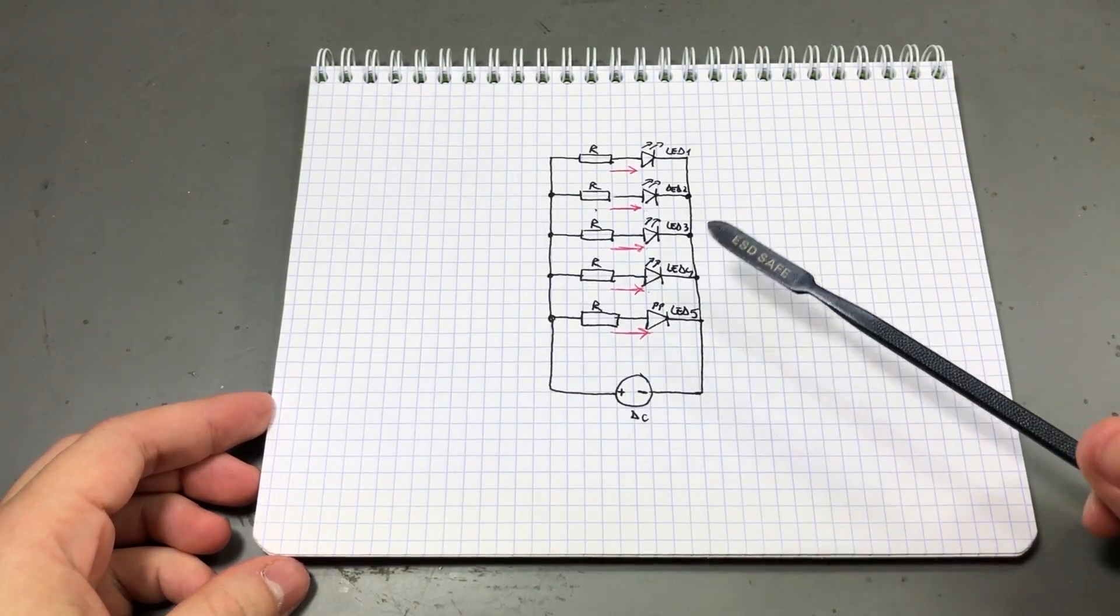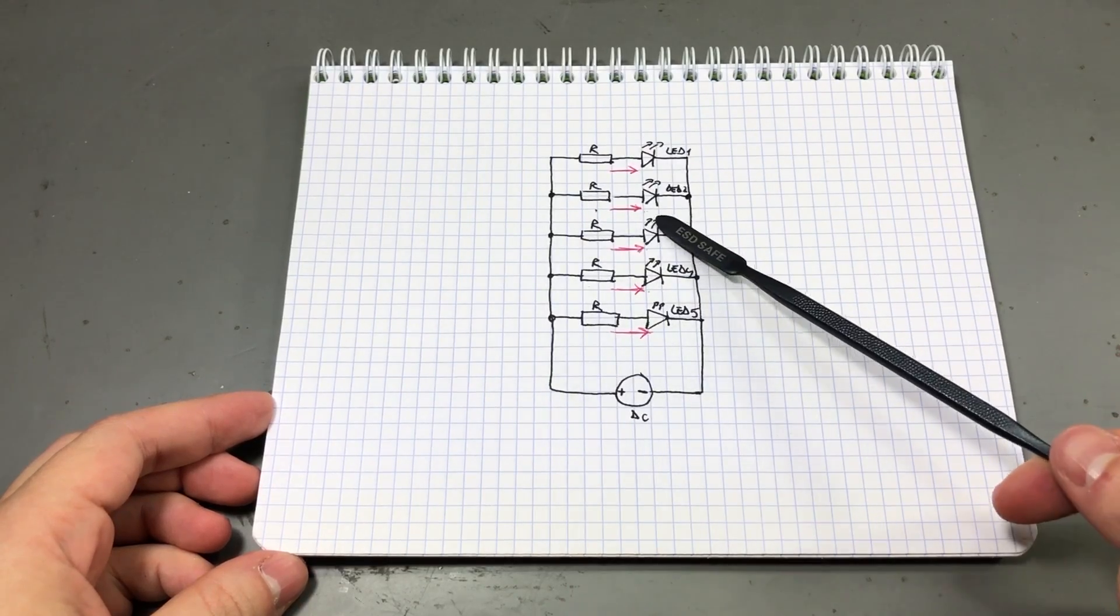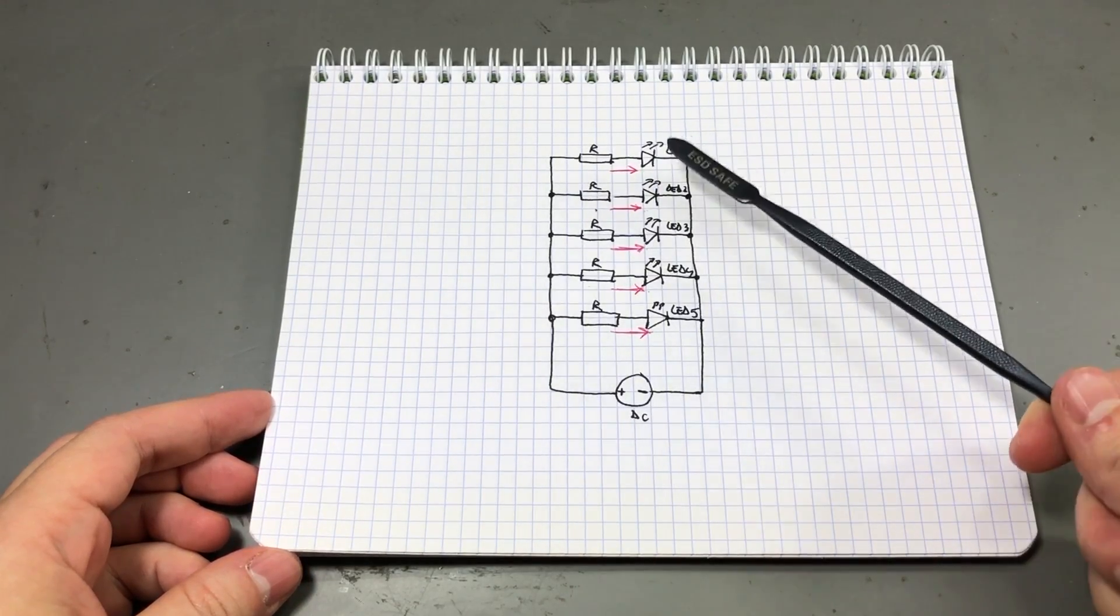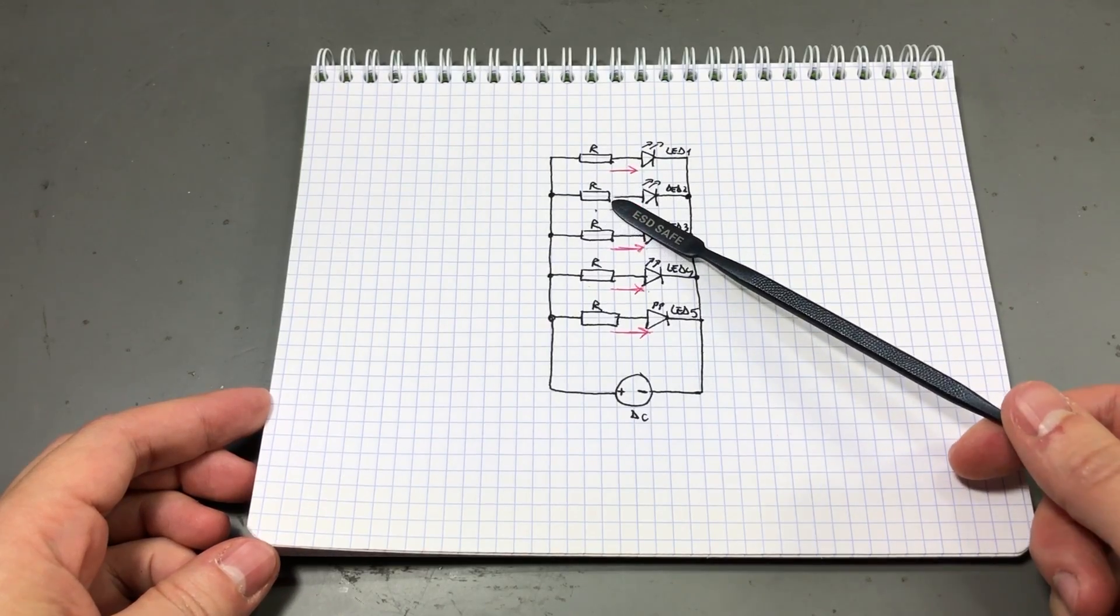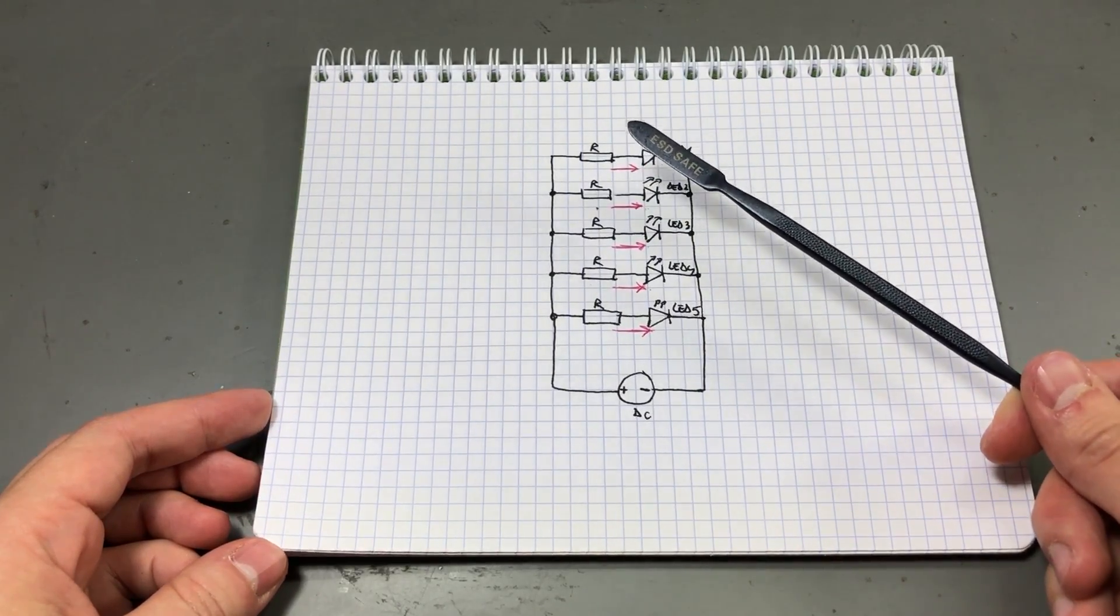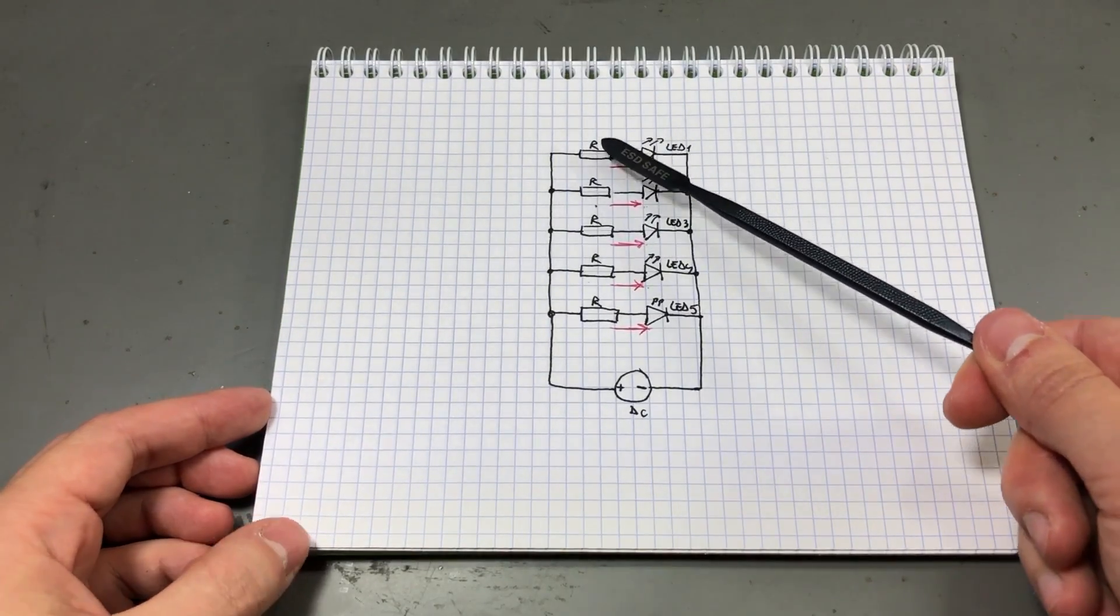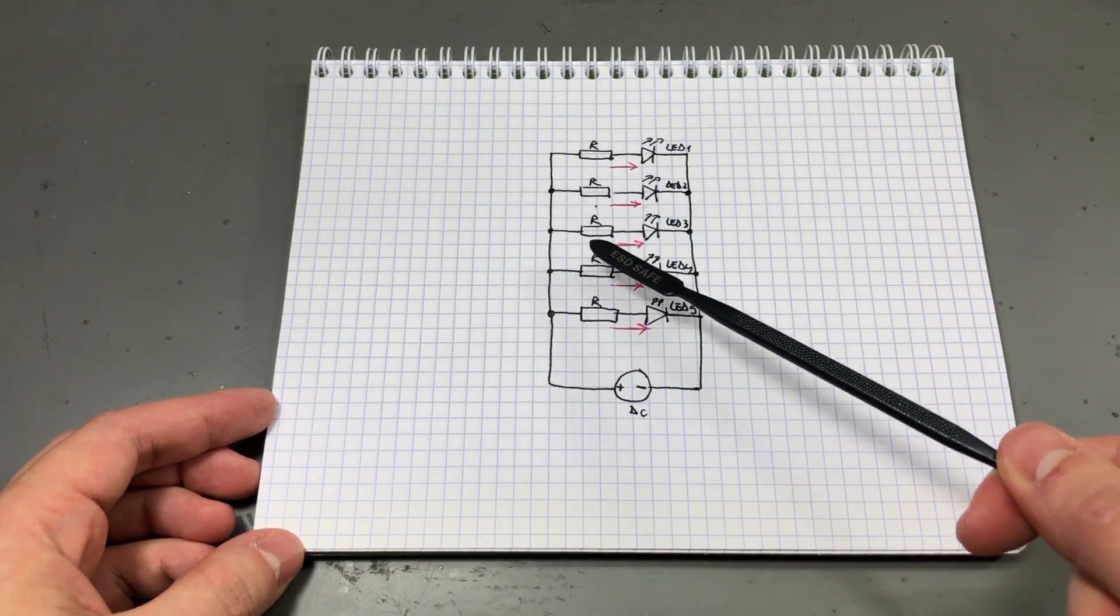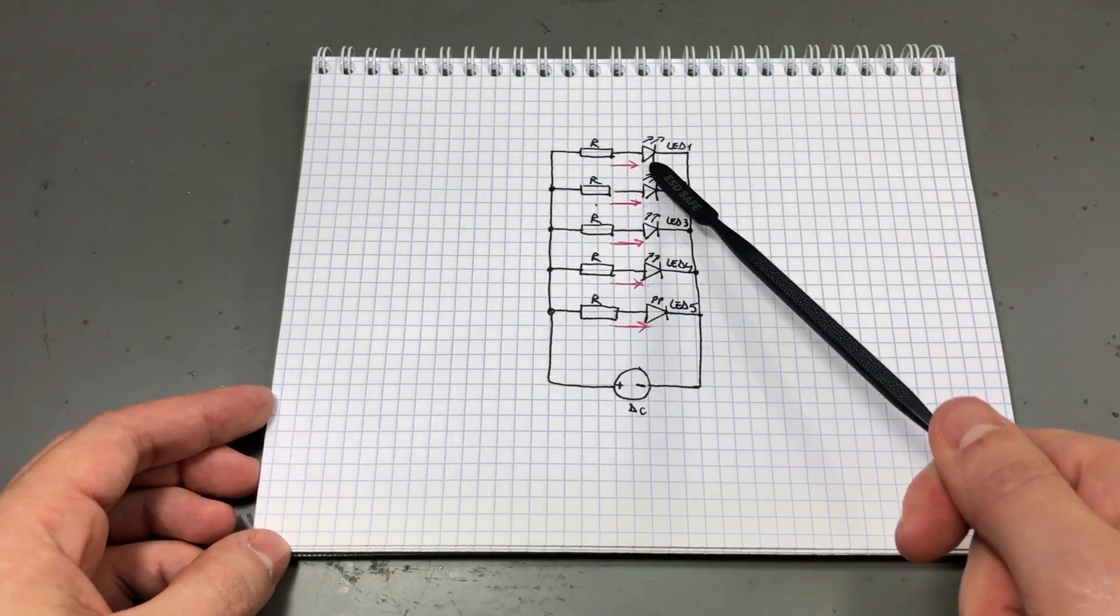We could also connect them like this in parallel and use individual resistors to limit the current through each LED. This will bring the current through LEDs to almost the same value but we would still have variations due to slightly different forward voltage between each individual LED. And also because of the tolerance of these resistors they will not be exactly the same value so we will still have some variations of current between each LED.